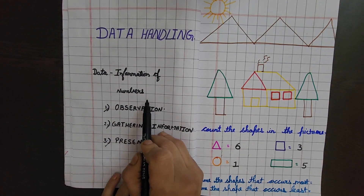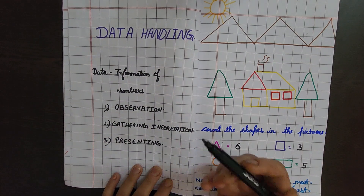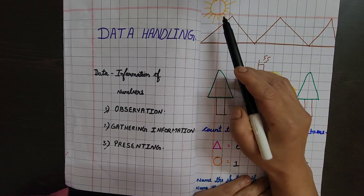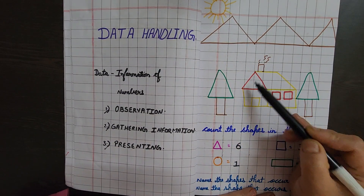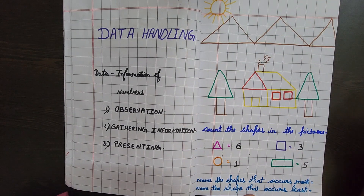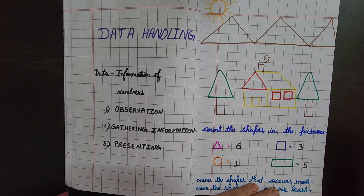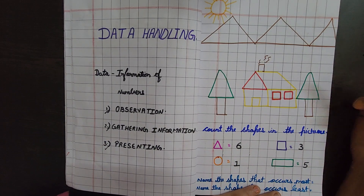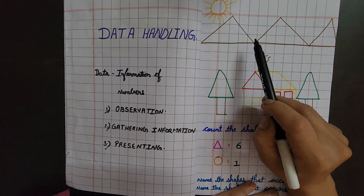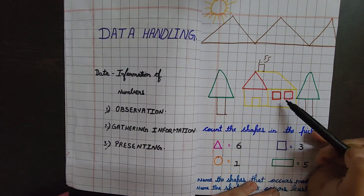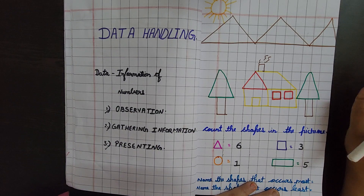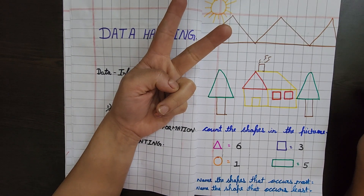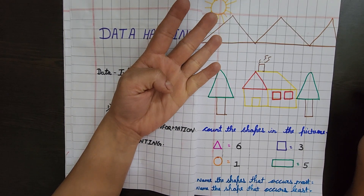Now I have a picture here with mountains, sun, trees, and a house — a small scenery. We need to count the shapes in the picture. How many types of shapes are there? Four shapes: circle, triangles, rectangles, and square.